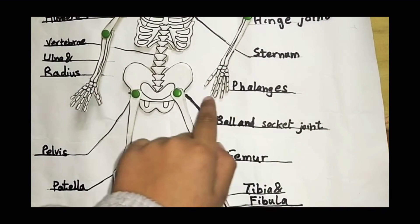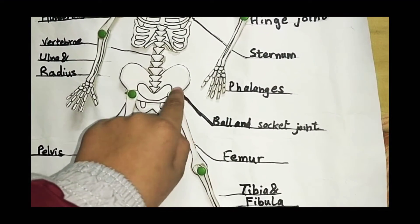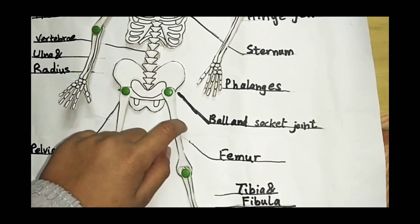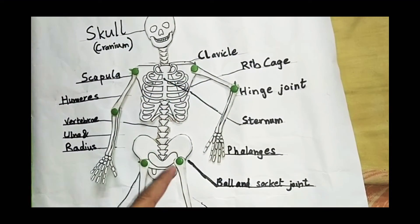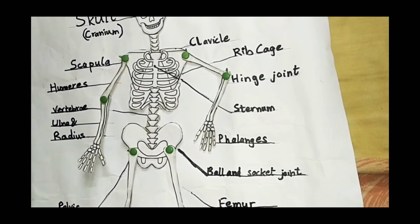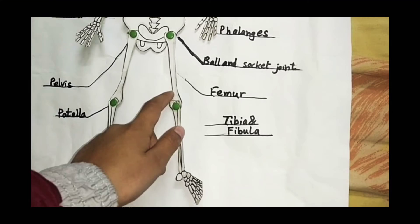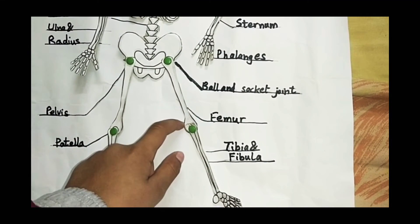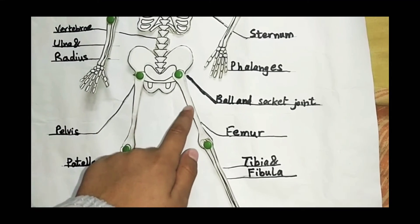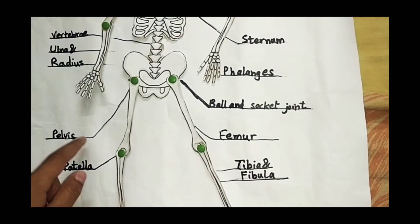This is the ball and socket joint which connects your leg with the pelvis. Even the shoulder joint is ball and socket joint. Now the longest bone in our body, it is femur, the thigh bone. This is pelvis.